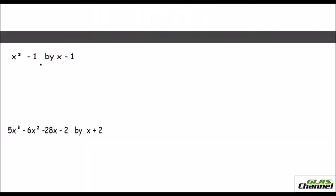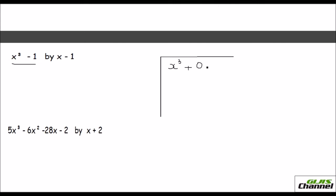Here you have x cubed minus 1 and you are going to divide by x minus 1. Here the dividend has one cubic term and then straight away a constant, so the x squared term and the x term are missing. Before dividing you will have to fill those in. The exponent should be written in decreasing order, so it would be x cubed, then 0x squared — that doesn't make any difference — then plus 0x, then minus 1. Divide this by x minus 1.